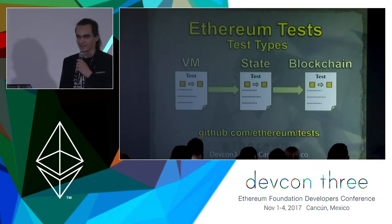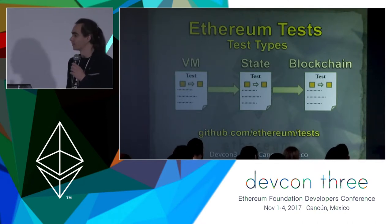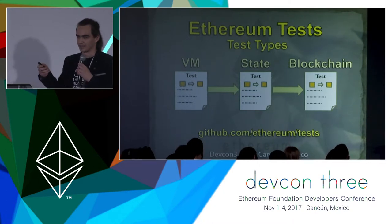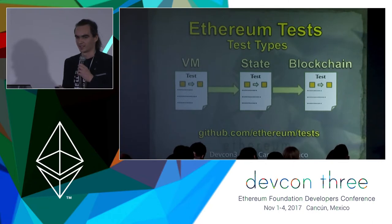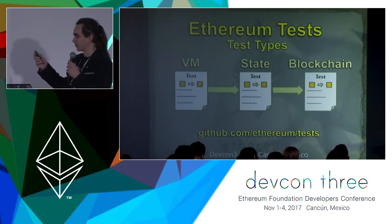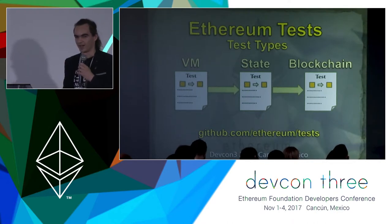The next is a state test — it's a bit more complex than a VM test. It has accounts, transactions, and state changes, state hashes, so it's a bit more complex. And the most sophisticated test is a blockchain test that has actual mining difficulty and consensus algorithms implemented.